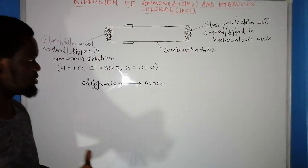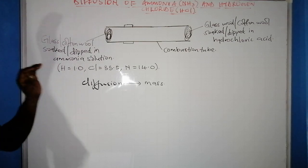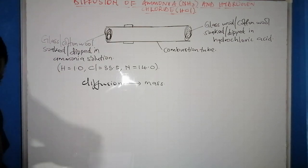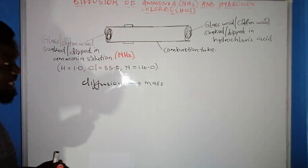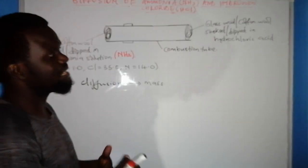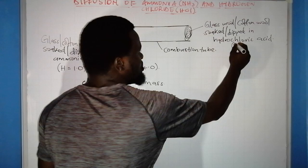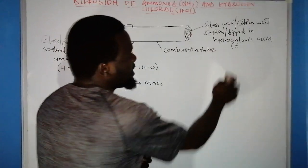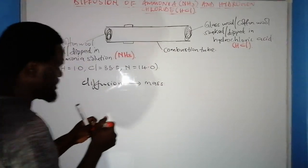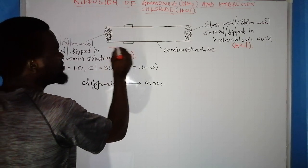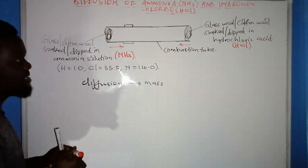Gases are always in continuous random motion. On the left-hand side there is a glass or cotton wool soaked in ammonia solution, so ammonia gas will be coming out from that end. On the right-hand side, a cotton wool is soaked in hydrochloric acid, which gives out hydrogen chloride gas. Ammonia gas will move in one direction and hydrogen chloride gas in the other, and they will meet at some point in the combustion tube.